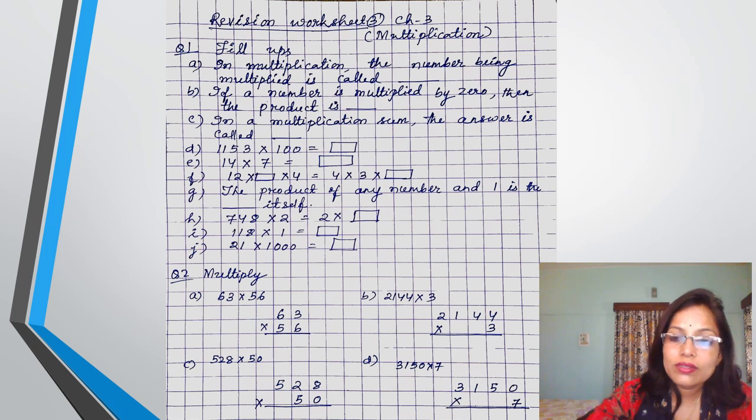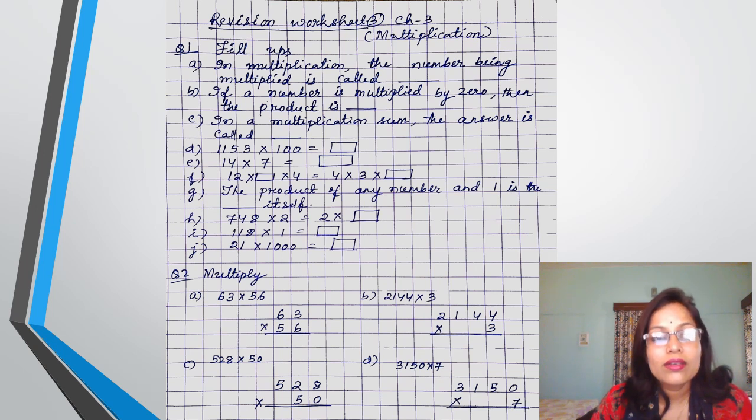So 0 is multiplied to any number. The answer will be what? 0 only. Next C. In a multiplication sum, the answer is called thus. Then D.